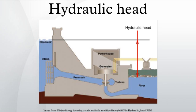Head loss: In any real moving fluid, energy is dissipated due to friction. Turbulence dissipates even more energy for high Reynolds number flows. This dissipation, called head loss, is divided into two main categories: major losses associated with energy loss per length of pipe, and minor losses associated with bends, fittings, valves, etc. The most common equation used to calculate major head losses is the Darcy-Weisbach equation.